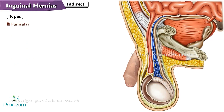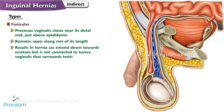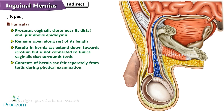Funicular Indirect Inguinal Hernia: In a funicular indirect inguinal hernia, the processus vaginalis closes near its distal end, just above the epididymis, but remains open along the rest of its length. This results in a hernia sac that may extend down towards the scrotum, but it is not connected to the tunica vaginalis that surrounds the testis. The contents of the hernia sac can be felt separately from the testis during a physical examination.